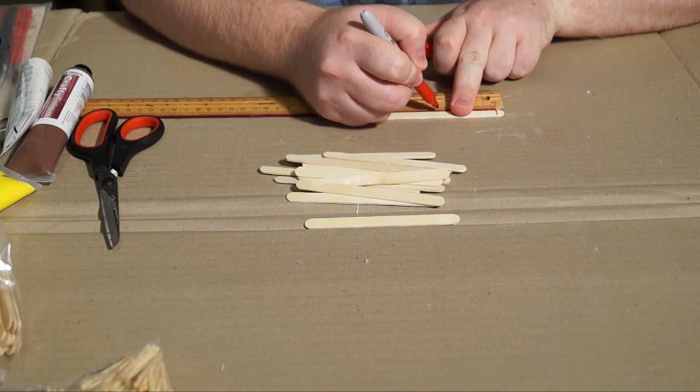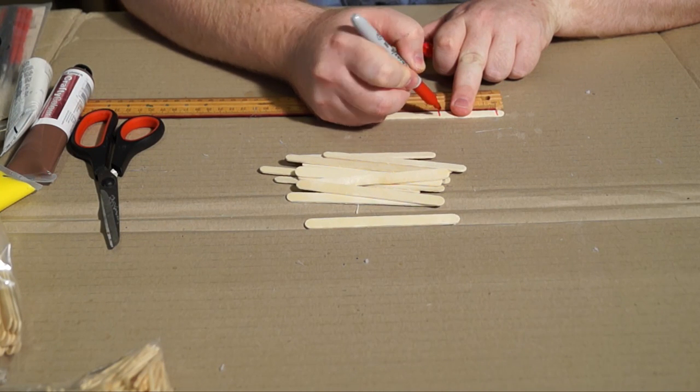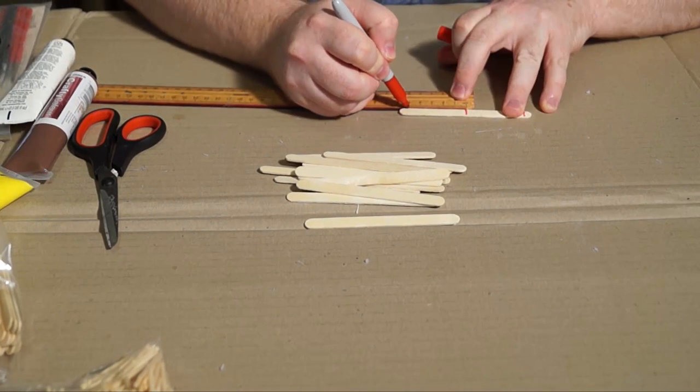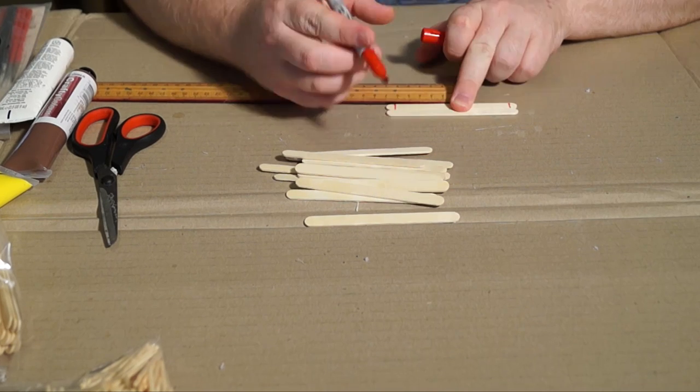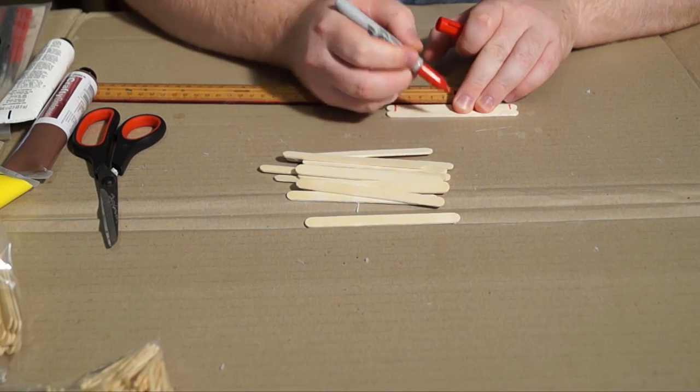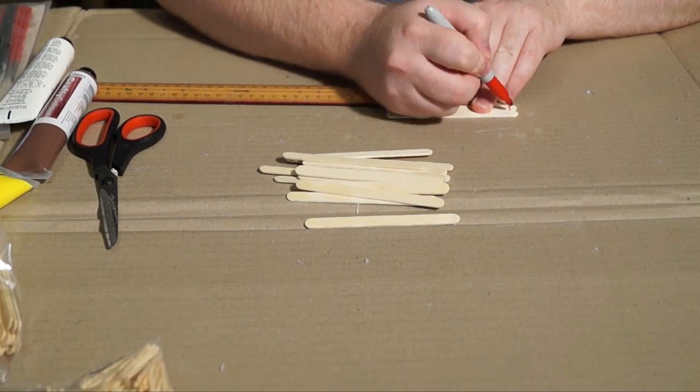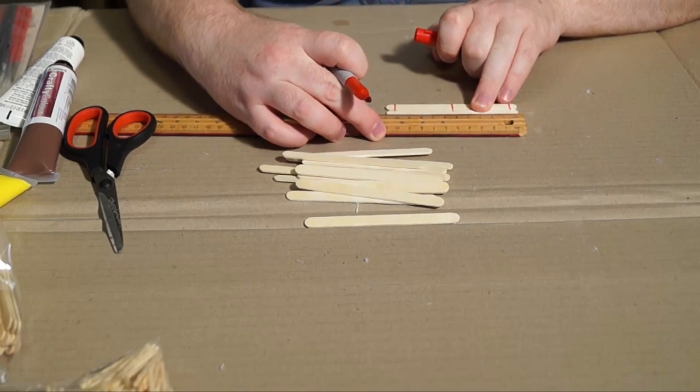We're going to grab some lollipop sticks, popsicle sticks, tongue depressors, whatever you want to call them, and we're going to measure out five centimeter strips. We're going to need eight of them.